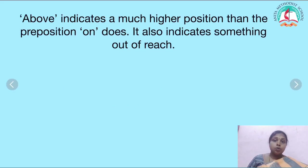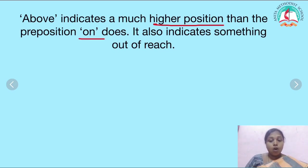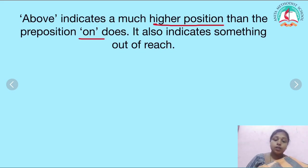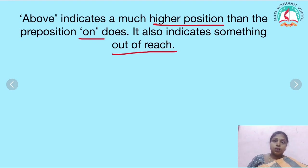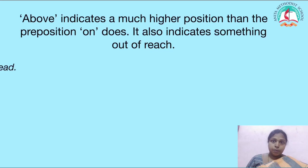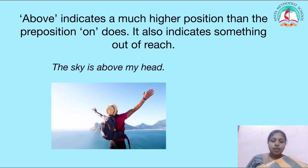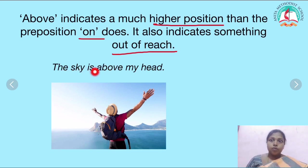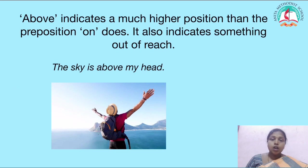Now let's see where to use above. Above indicates a much higher position than the preposition on does. I told you on indicates a position where the object should touch. Above is a higher position than that. It also indicates something out of reach — we cannot touch it. In such a case, we have to use the preposition above.